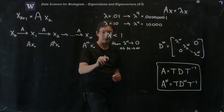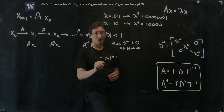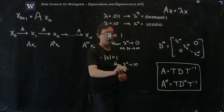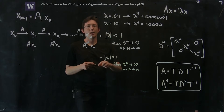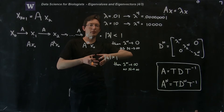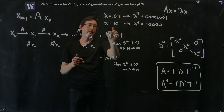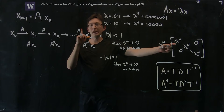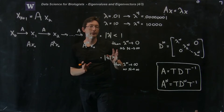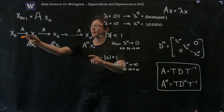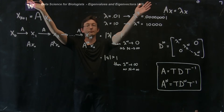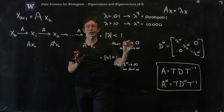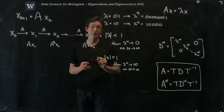The next case: if lambda is bigger than 1, we have the opposite — lambda to the n blows up to infinity as n goes to infinity. If I have a big lambda and iterate a billion times, this is just going to get bigger and bigger and eventually blow up. So if even a single eigenvalue of matrix A has magnitude larger than 1, this sequence can go unstable and blow up to infinity.